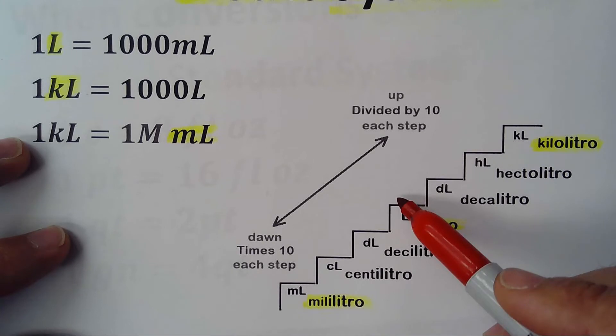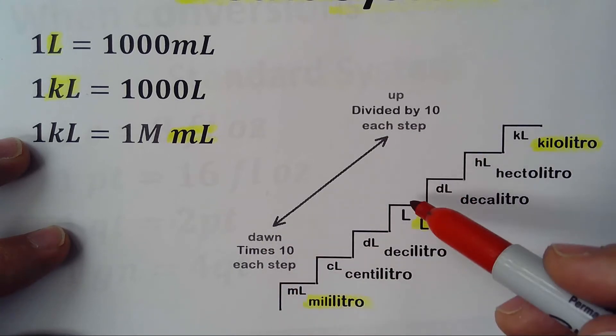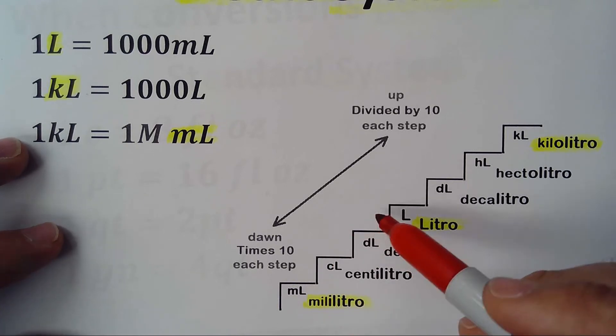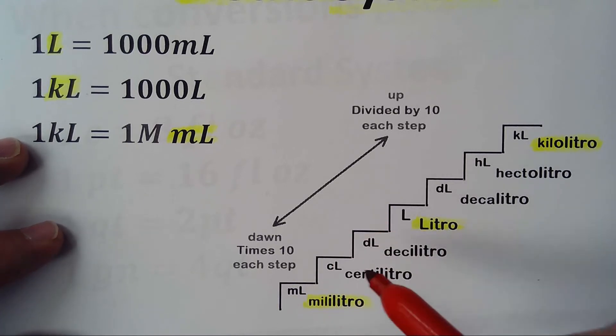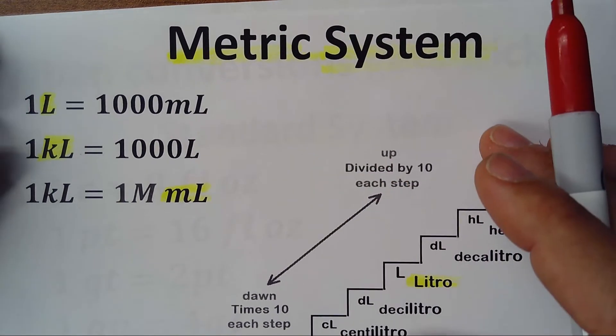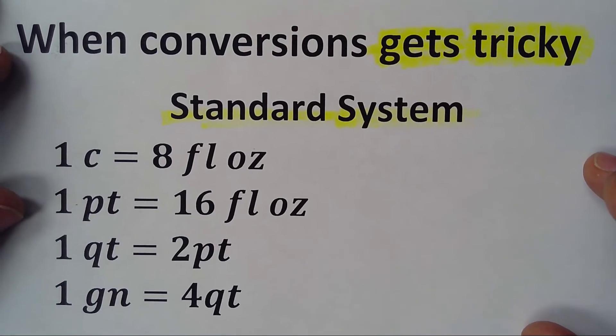Each step is 10. When you go up you divide it, when you go down you multiply. So it's very simple when you do conversions in the metric system. This is the metric system, but we're going to talk today about the standard system - it's the one that we use more in the United States.